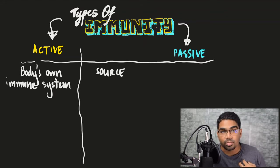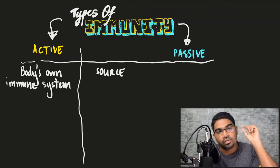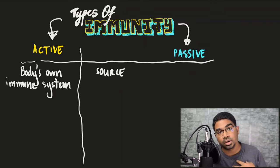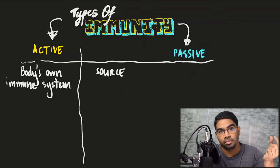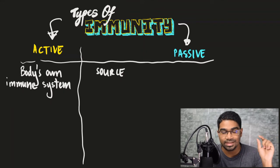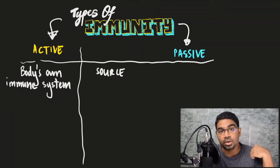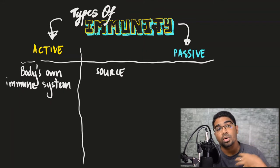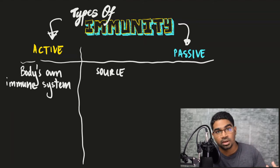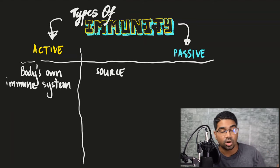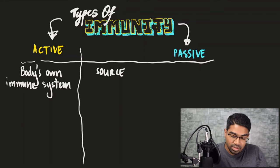When there are microorganisms that cause disease in the body, our body will produce antibodies against them. Or when there are foreign substances that enter the body — substances that do not belong in our body, such as snake venom — these substances are toxic, our body will detect them and produce antibodies. This is called active immunity.